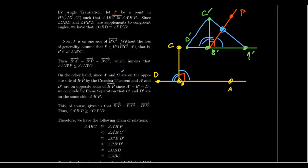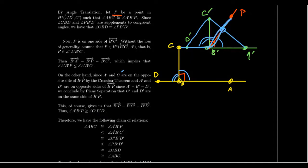This gives us that the segment B'C' sits between B'P and B'D'. Since ray B'C' sits in between the other two rays, that means the angle C'B'D' is less than the angle A'B'P. So this angle is bigger than this angle over here.